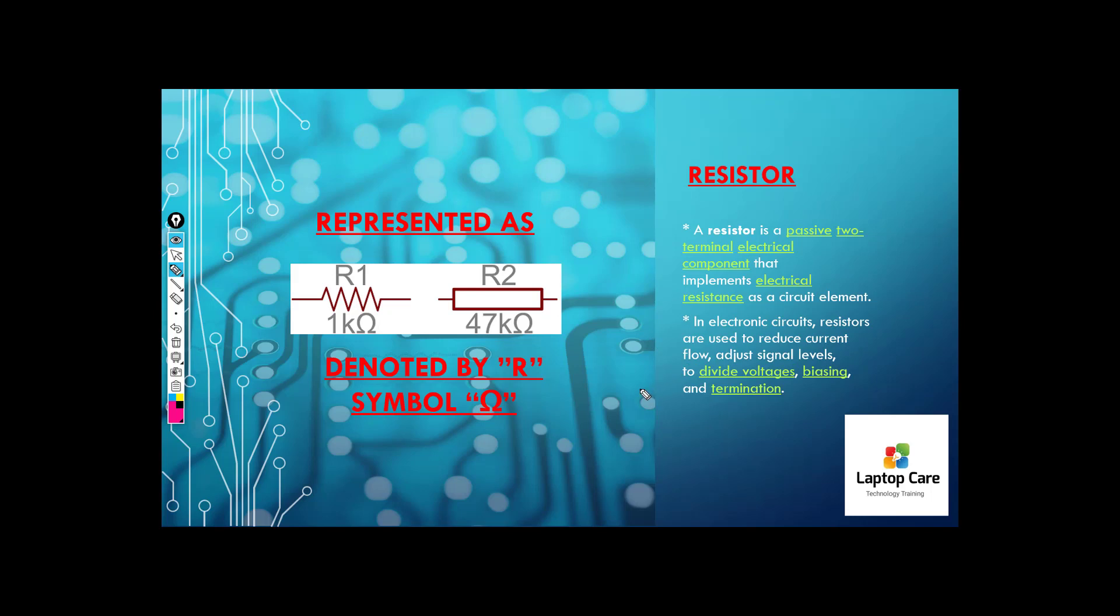So we are using the direct resistance to reduce the current flow and control the current flow. The current flow to reduce and control it. The signal level to adjust it. The voltage to divide it, or termination. This is a major resistor of uses in the circuit.